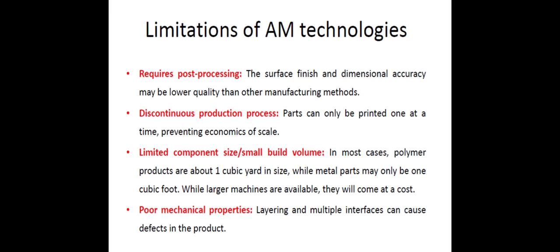Limited component size or small build volume: large products cannot be manufactured in additive manufacturing. In most cases, polymer products are about one cubic yard in size, while metal parts may only be one cubic foot. While larger machines are available, they come at a higher cost and may not be economical for a company. Poor mechanical properties: layering and multiple interfaces can cause defects in the product.